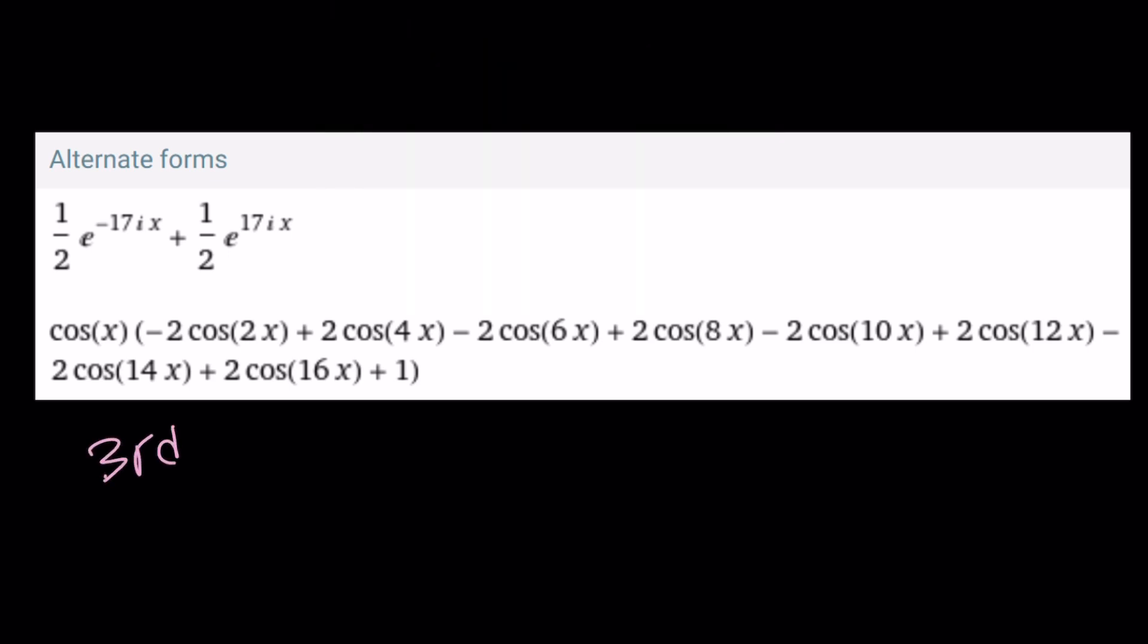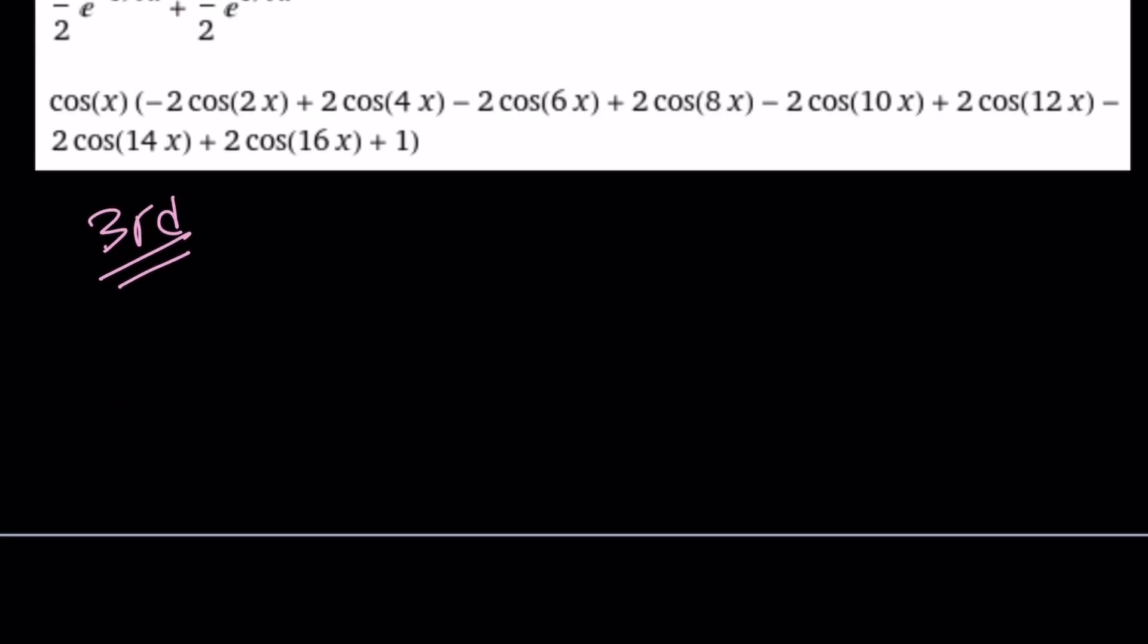So, for the third approach, again, the problem is f(cos x) is given as cos(17x). And you're supposed to evaluate f(sin x).